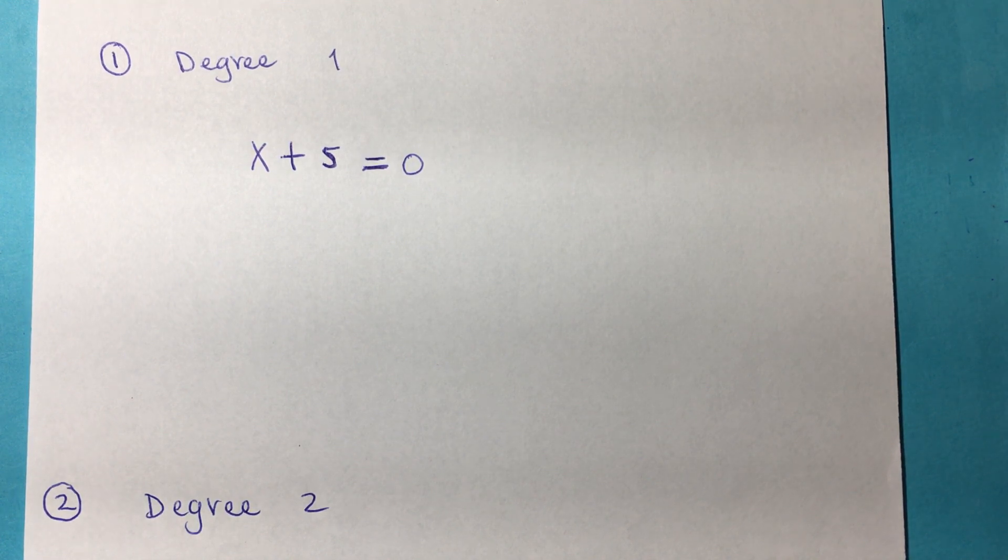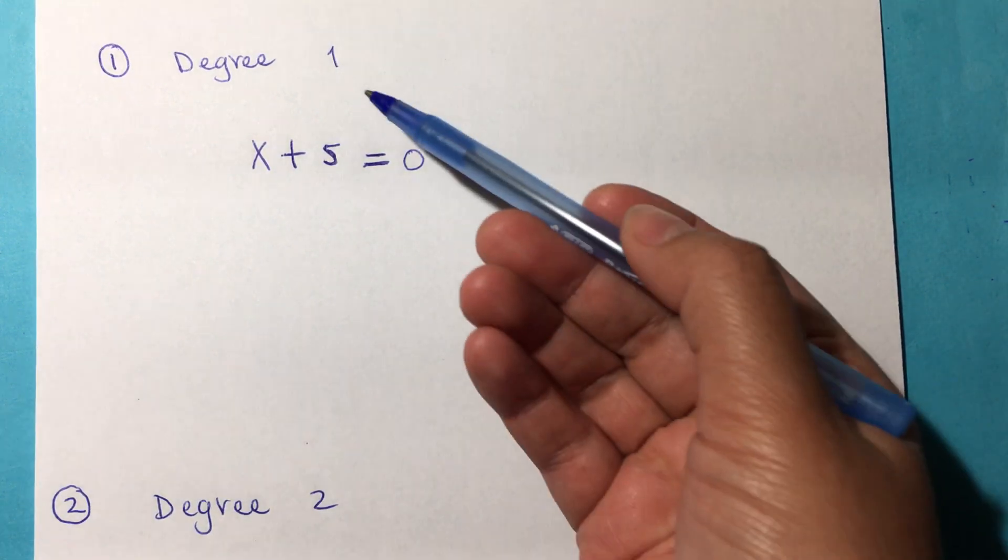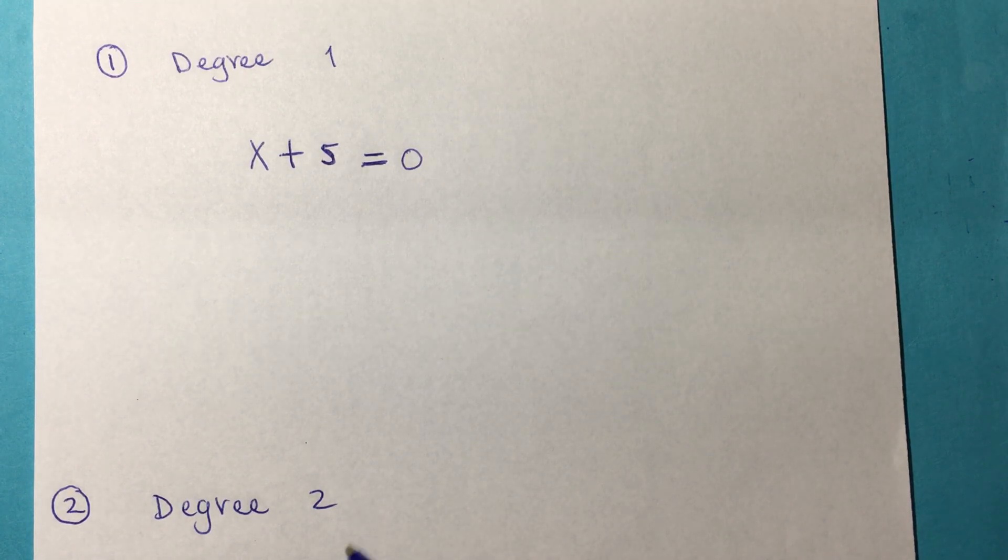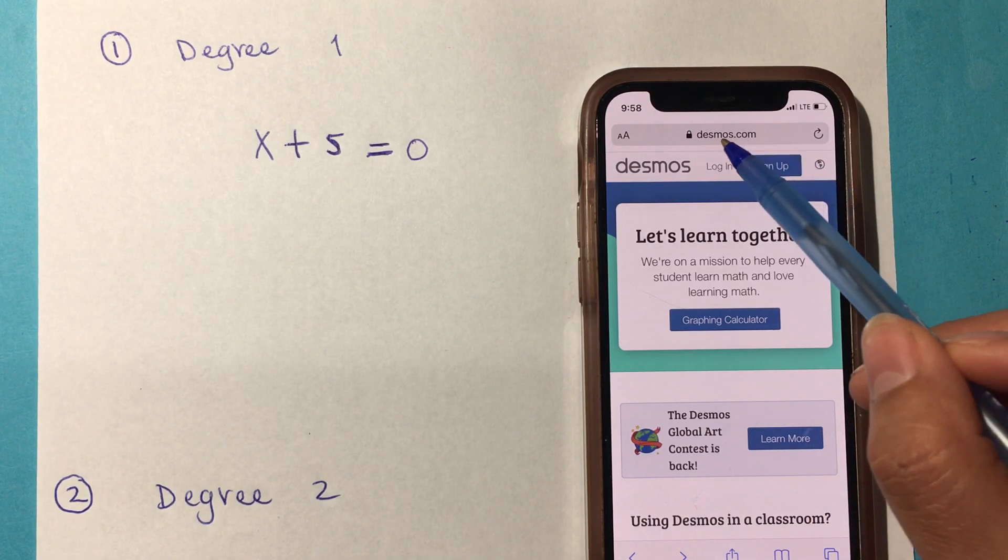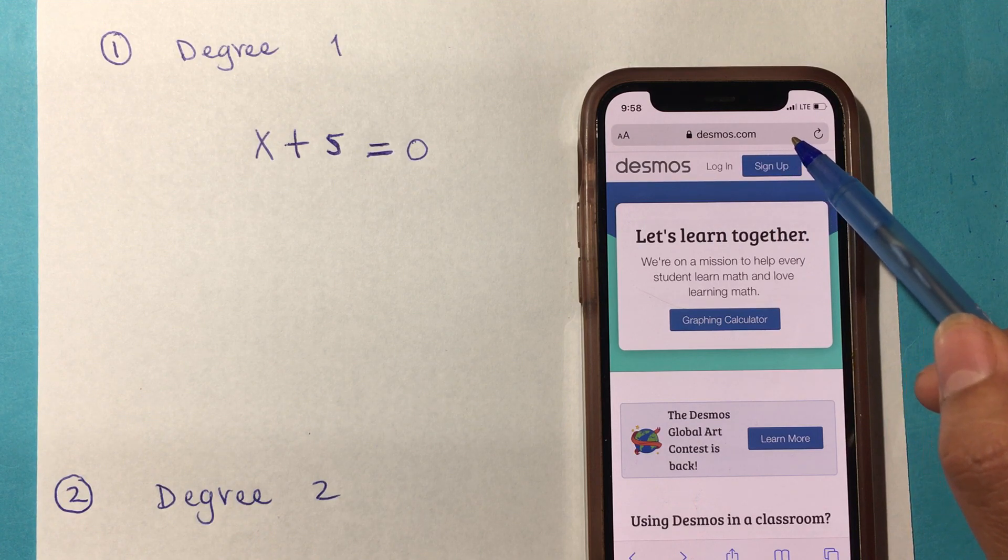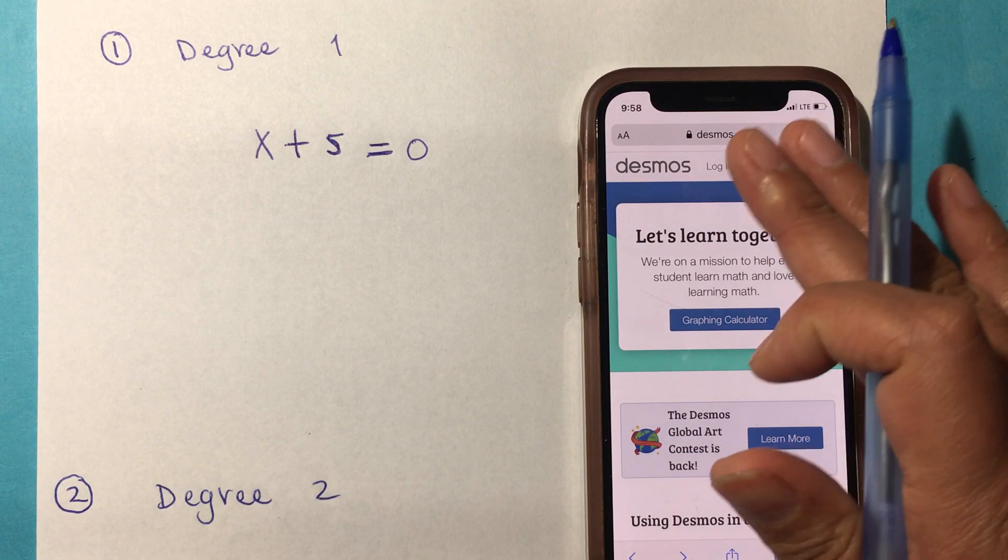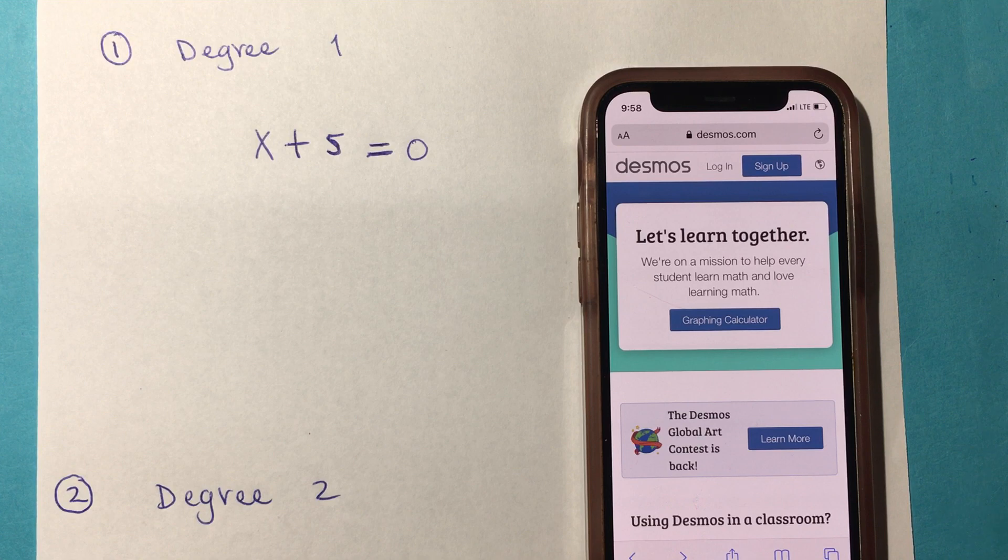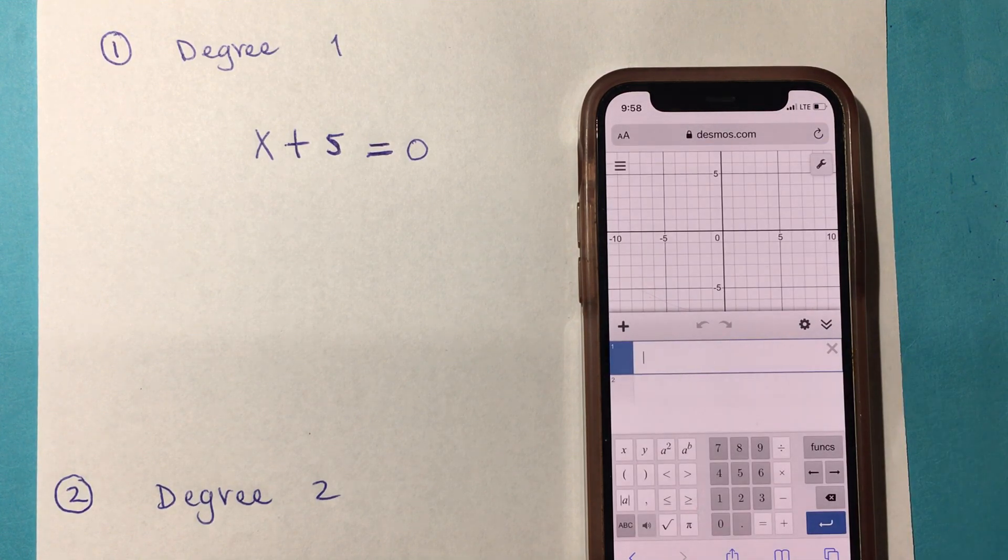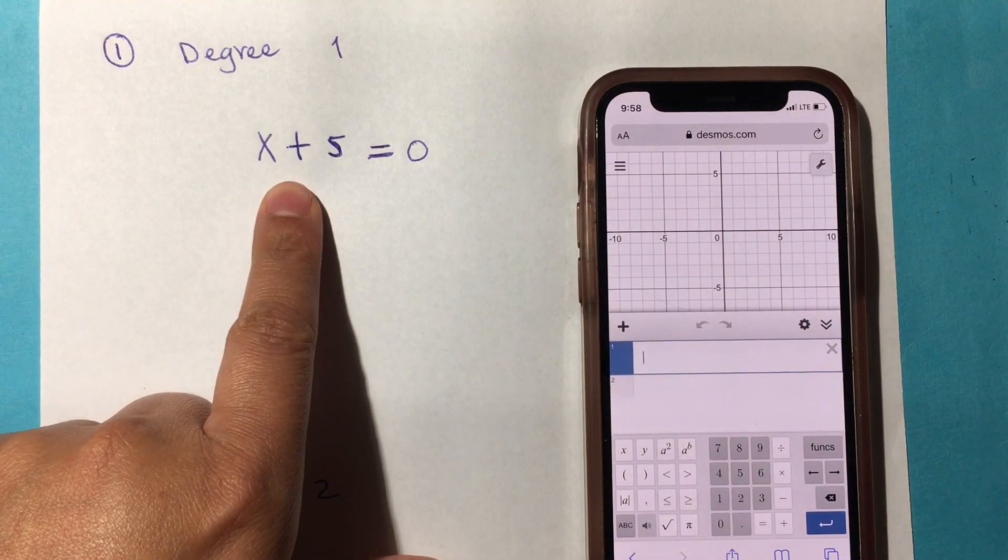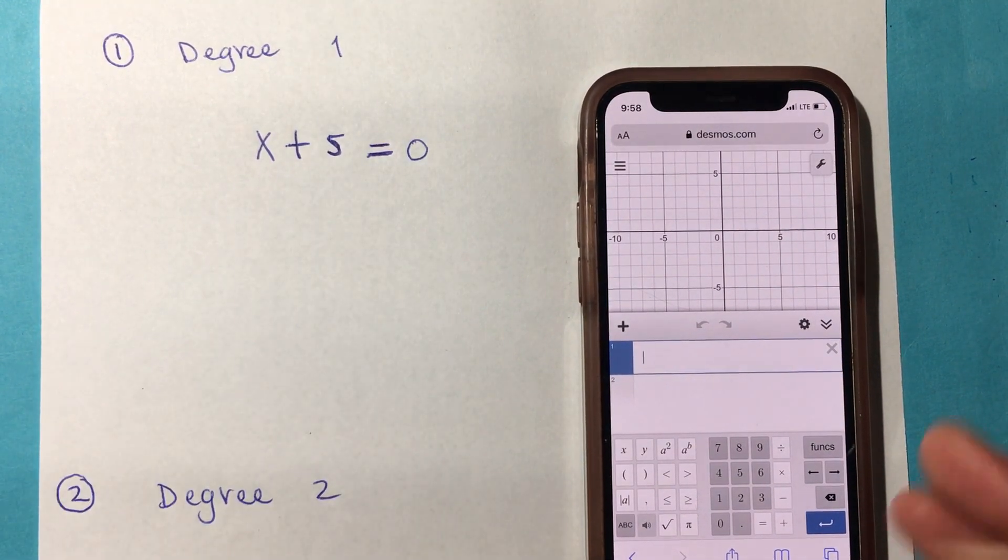We're going to see the linear, meaning degree 1 and degree 2 and degree 3. I'm going to be using Desmos.com. You can type this online and on your phone just press graphing calculator, and that's what comes up.